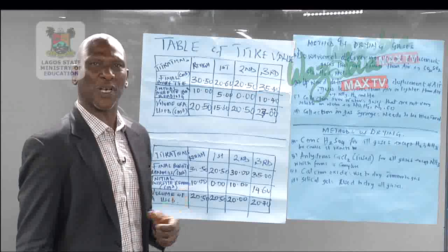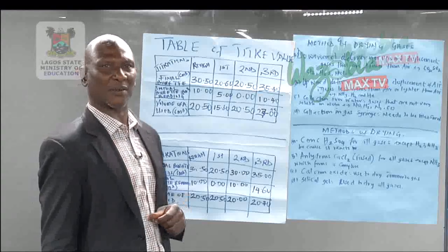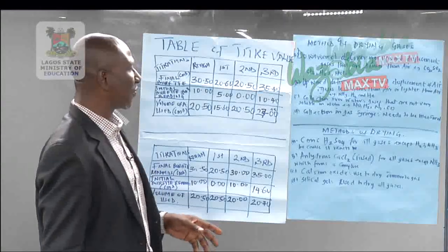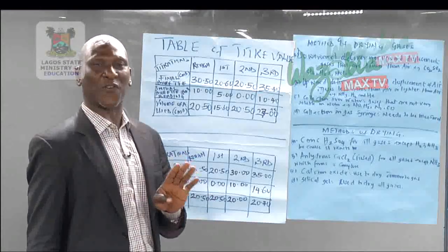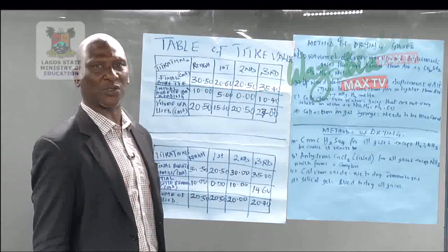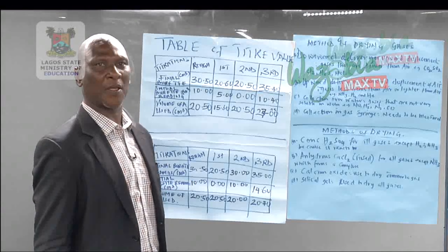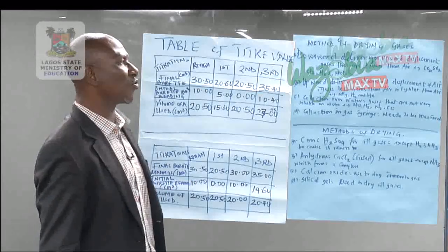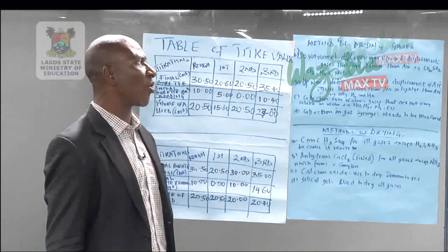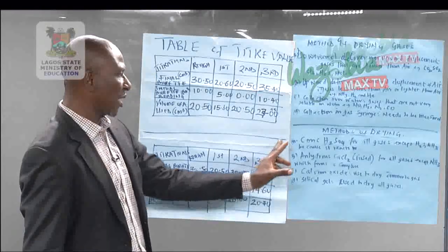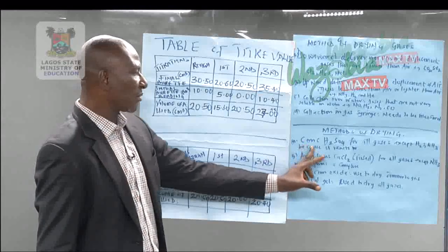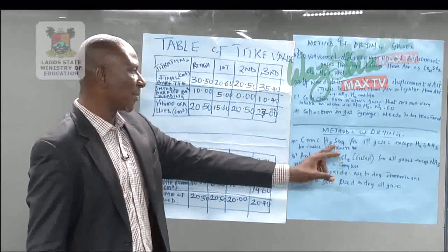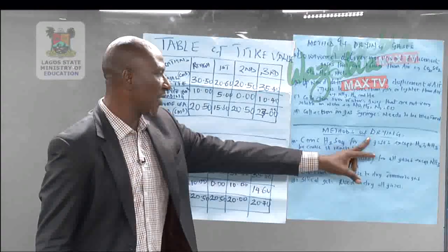Then how do we now collect the gas? We have different methods of collecting gas. Let us look at four different methods. The first method is the drying of the gas.